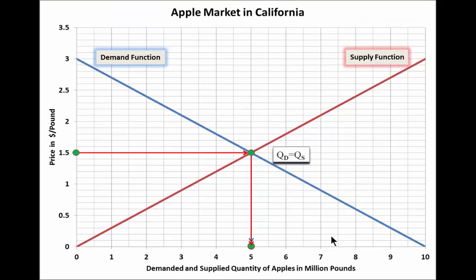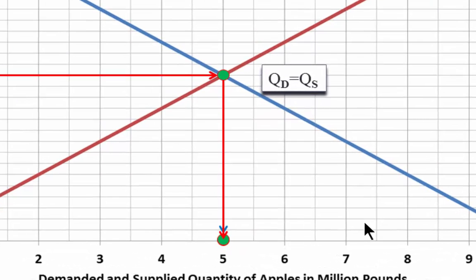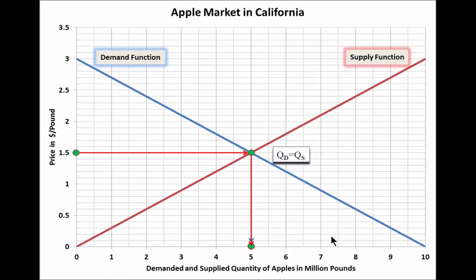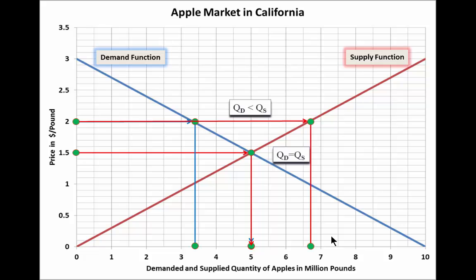We saw that a price of 1.50 creates an equilibrium where demanded and supplied quantities are the same. The question is whether the market will automatically generate a price of 1.50. To answer this, we start with a price that is greater than the equilibrium price — for example, 2 dollars.